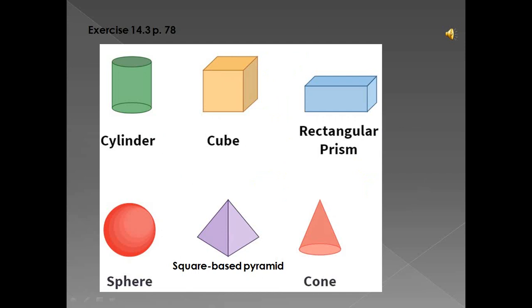Now let's look at exercise 14.3 on page 78. This is a really easy activity — you're basically just going to name the different 3D objects and talk about their characteristics. The types you get are a cylinder, a cube, a rectangular prism, a sphere, a square-based pyramid, and a cone. In all of the questions you're going to identify them, note what you notice about them, and describe their characteristics.